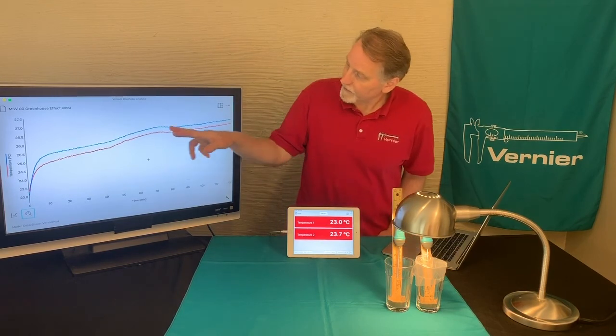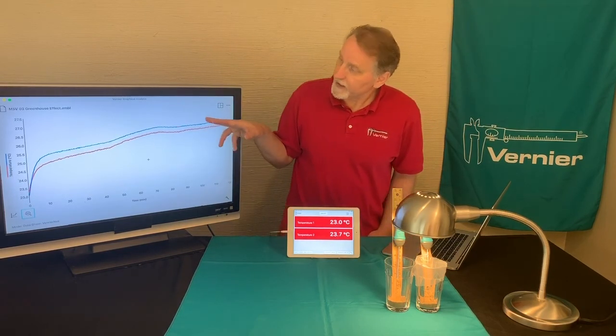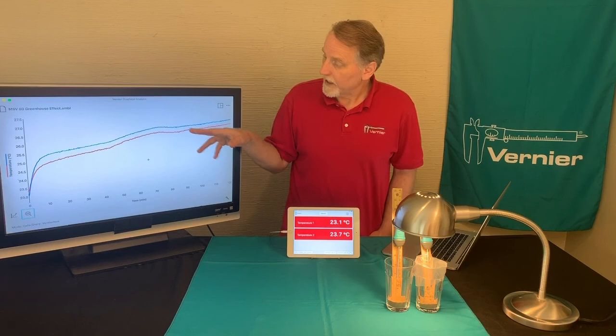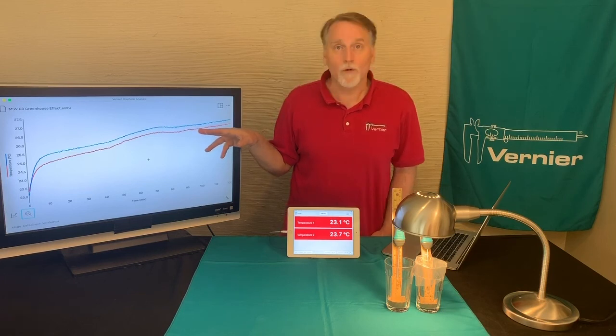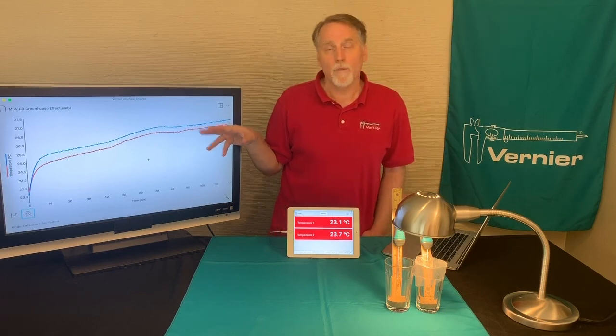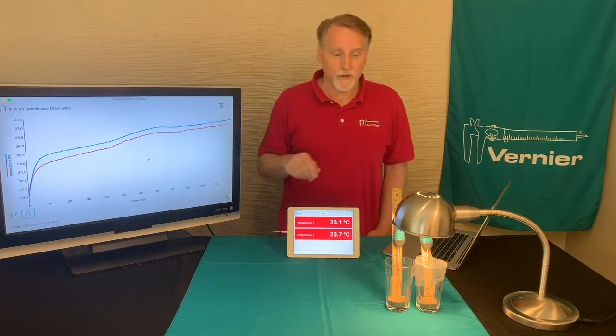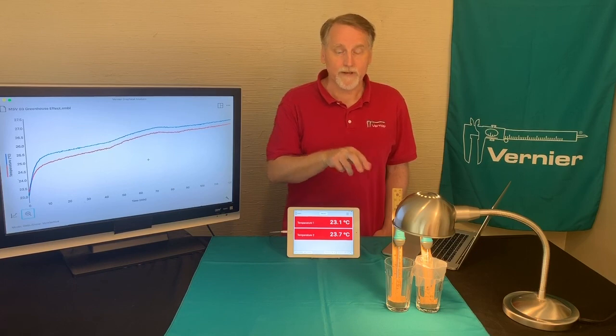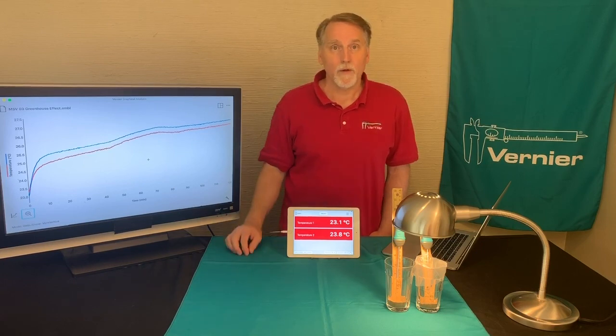The upper run is the model greenhouse and the lower one is the control. This experiment allows you to use the temperature sensors to examine the way a greenhouse works.